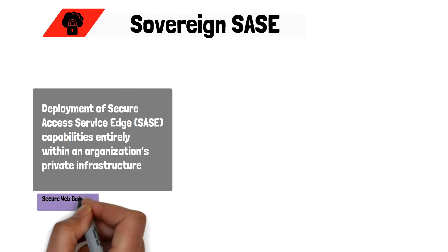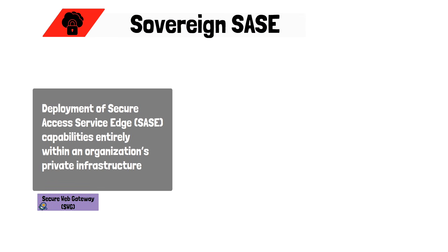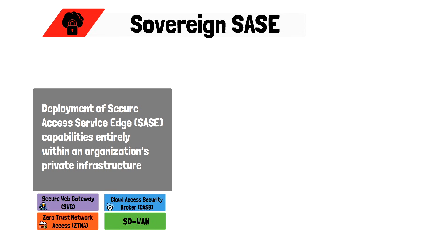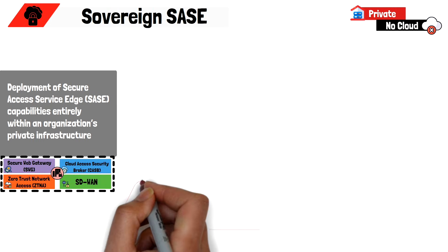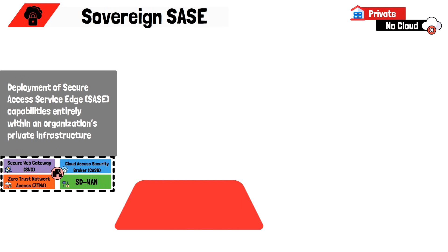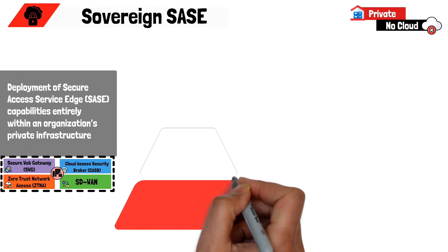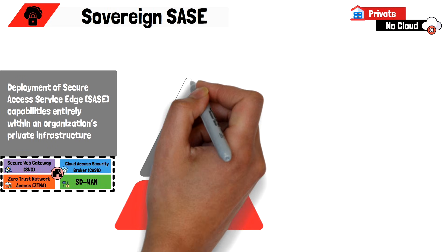Unlike traditional SASE offerings, where users connect to vendor POPs for security inspection and policy enforcement, with Sovereign SASE, all security inspection locations are hosted within the organizational infrastructure. To understand how Sovereign SASE works, it's important to discuss the major pillars from which Sovereign SASE is designed.